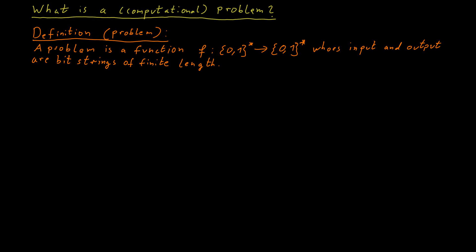So we would say if we get some input x, then the appropriate output if we want to solve this particular problem is f(x). By now you will be aware that this restriction to bit strings as inputs and outputs is not a real restriction.